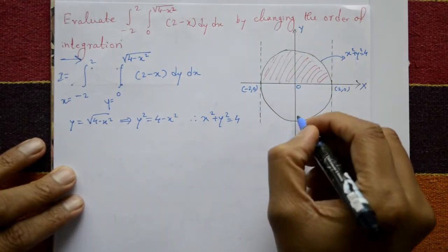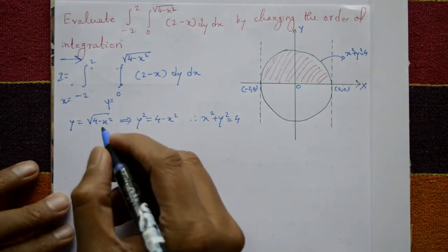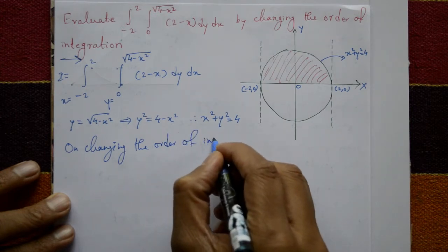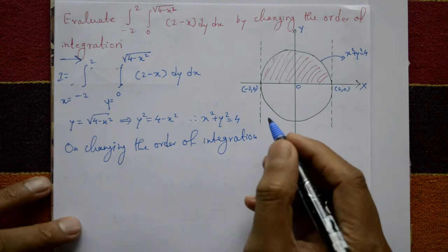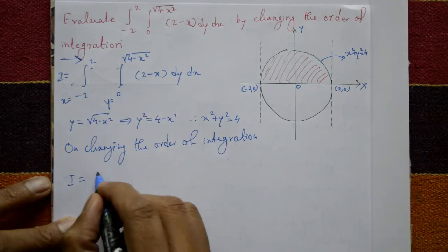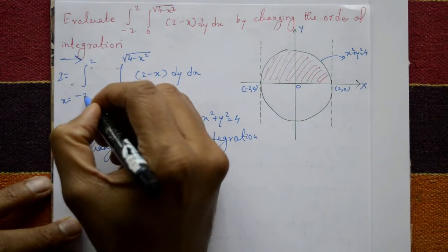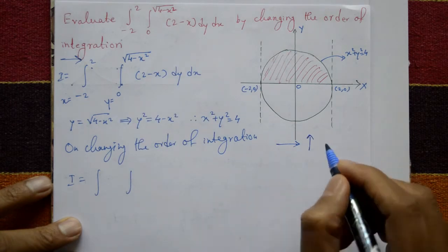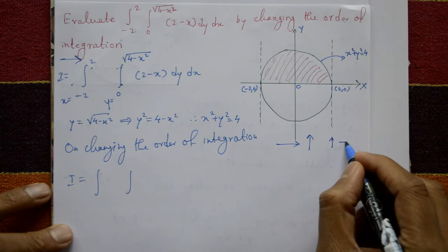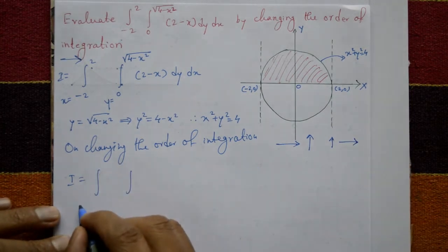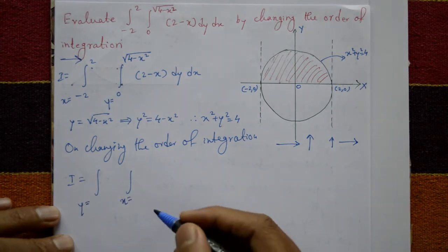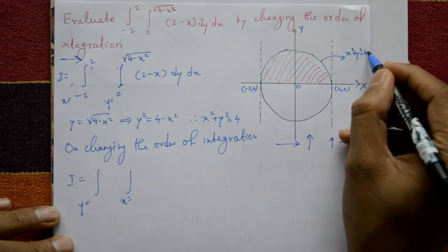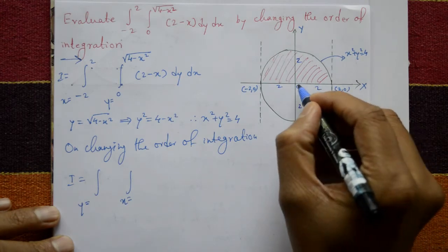The radius is 2 in all directions — equal distance. Now changing the order of integration: originally we integrate x first (left to right, minus 2 to plus 2), then y (bottom to top, 0 to square root of 4 minus x squared). After changing the order, we integrate y first (bottom to top), then x (left to right). Now taking only the positive side: y goes from 0 to 2, since the radius is 2.